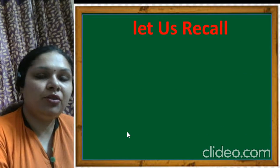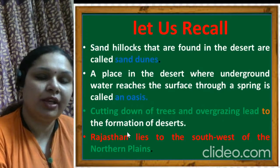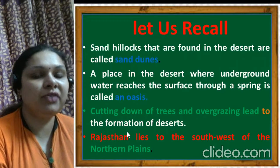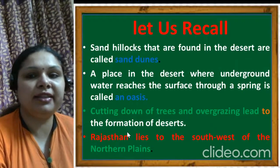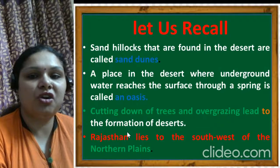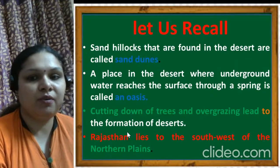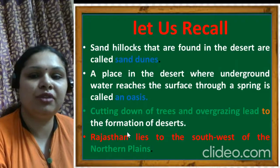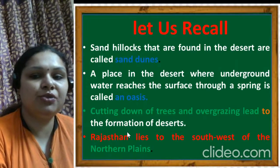Now we will do the recapitulation or summarization of the chapter - write this in your notebook as well. Let us recall: sand hillocks found in the desert are called sand dunes. A place in the desert where underground water reaches the surface through a spring is called an oasis. Cutting down of trees and overgrazing lead to the formation of deserts.